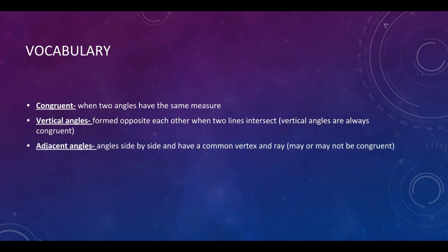Then you have adjacent angles. These are just next-door-neighbor angles. They're right next to each other. They're side-by-side. They share a common vertex and ray. So again, they're right next to each other. They may or they may not be congruent with one another.